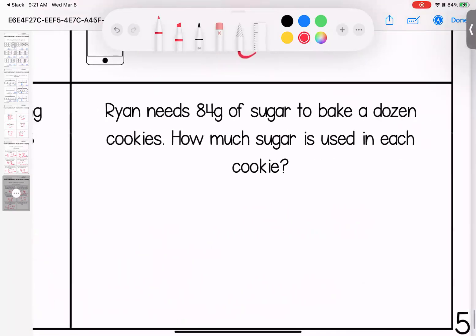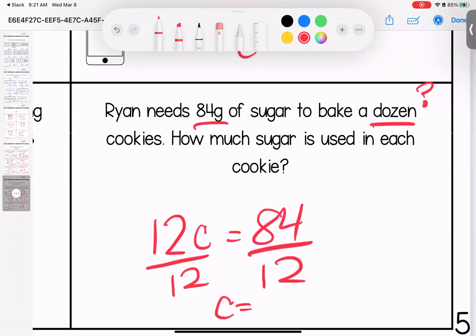Last one. Ryan needs 84 grams of sugar to bake a dozen cookies. How much sugar is used in each cookie? Well, how many cookies are in a dozen? There's 12. So 12 cookies need 84 grams of sugar. That means that each cookie gets seven grams of sugar. Any questions on these sweet faces, please bring them with you to class.